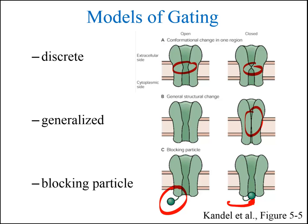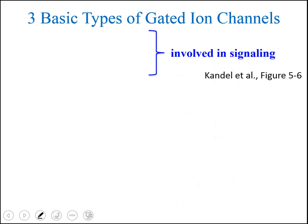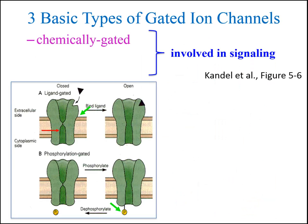If the structure of a protein changes, energy needs to be supplied to cause that change in conformation. There are three basic types of stimuli that provide the energy for gating. The first is ligand binding. Recall that a ligand is any molecule or ion that binds to a protein by non-covalent bonds, such as a neurotransmitter. Examples involving ligand-gated channels include the postsynaptic receptors involved in producing synaptic potentials.